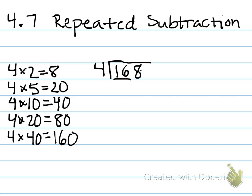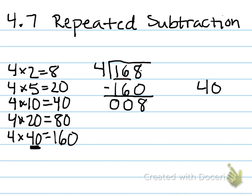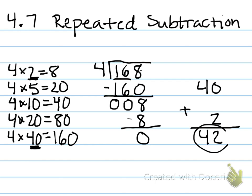4 times 40 would be 160, which is really close to 168. So that's the one I'm going to use first to subtract. Taking away 160, I record the 40th multiple on the side. 8 minus 0 is 8, 6 minus 6 is 0, 1 minus 1 is 0 — so I'm left with just 8. I'll use the second multiple because it is 8, subtract 8, write the multiple over here. 8 minus 8 is 0. Then to figure out my final quotient, I add up the multiples on the side: 40 plus 2 is 42.